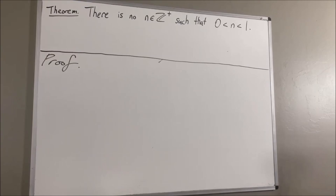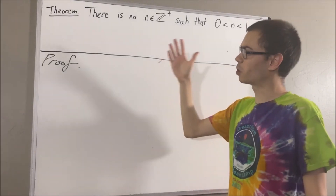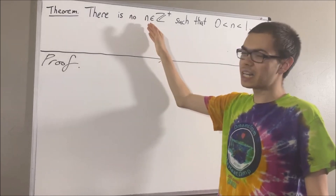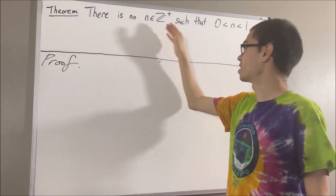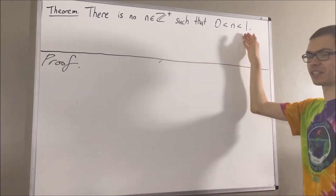Hello! In this video, we are going to prove the following theorem: there is no positive integer n such that 0 is less than n is less than 1.